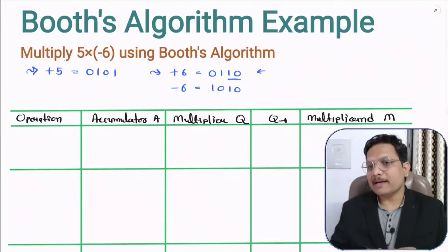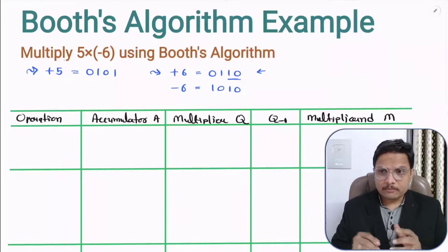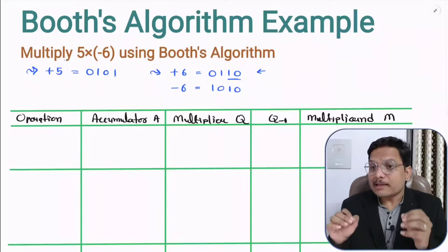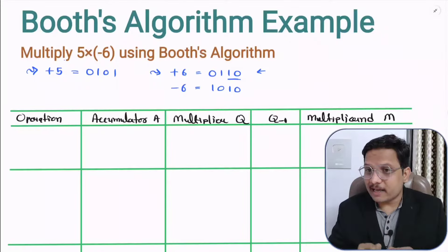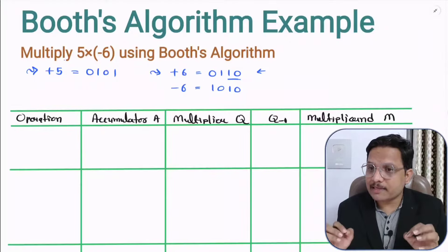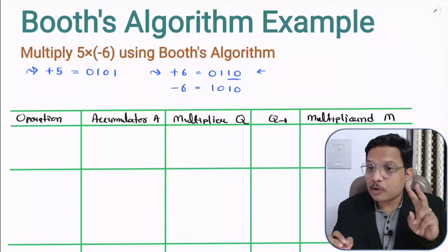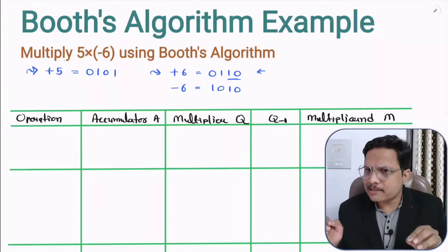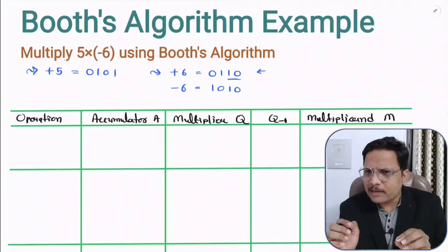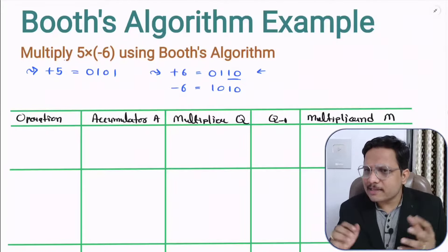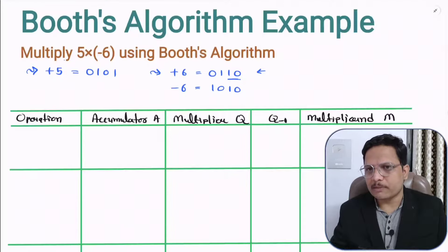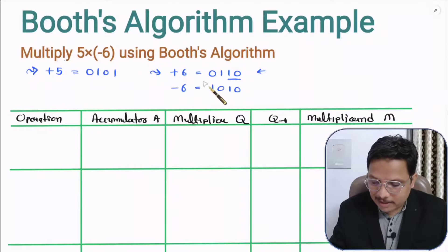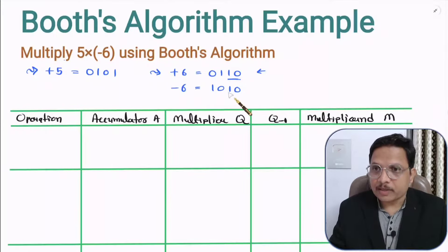Remember, in computer, negative data is represented by 2's complement. And this is the shortest way by which we can easily calculate 2's complement. So now we have the multiplier and multiplicand.